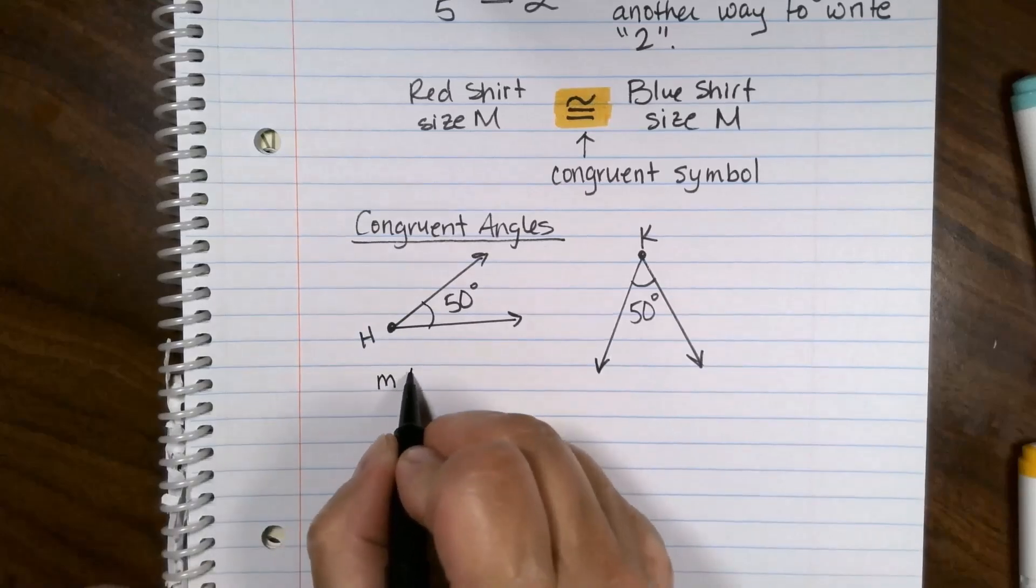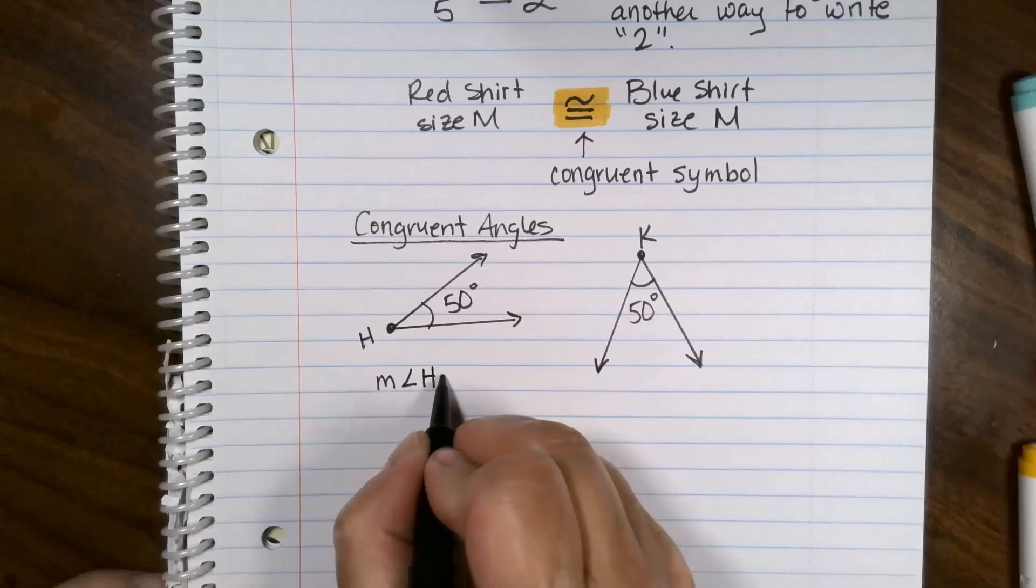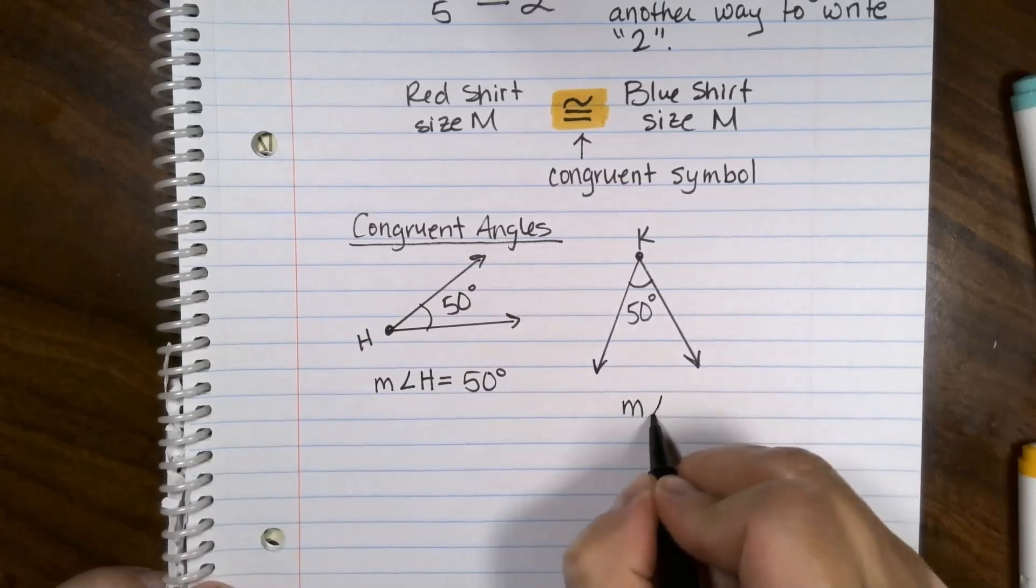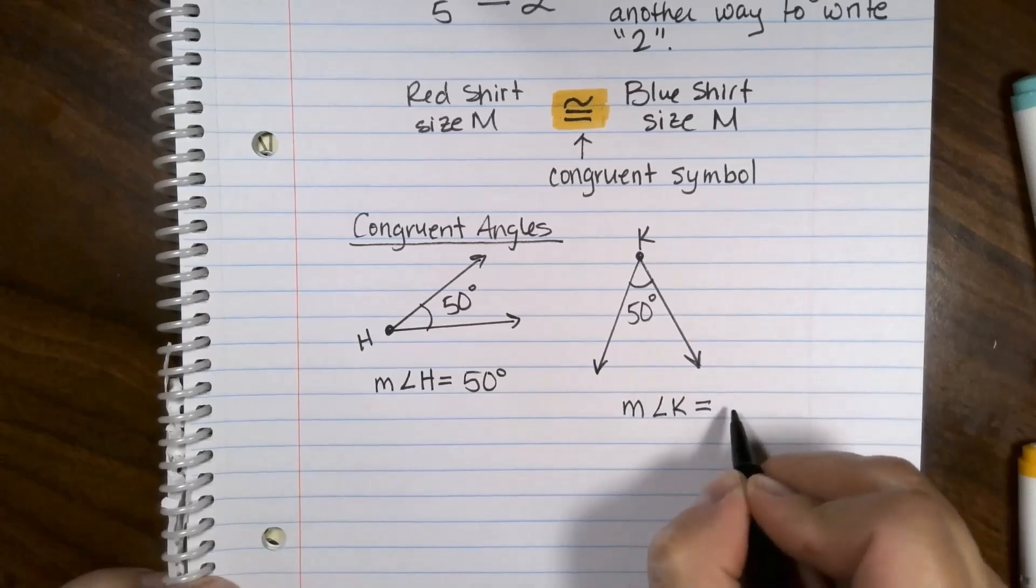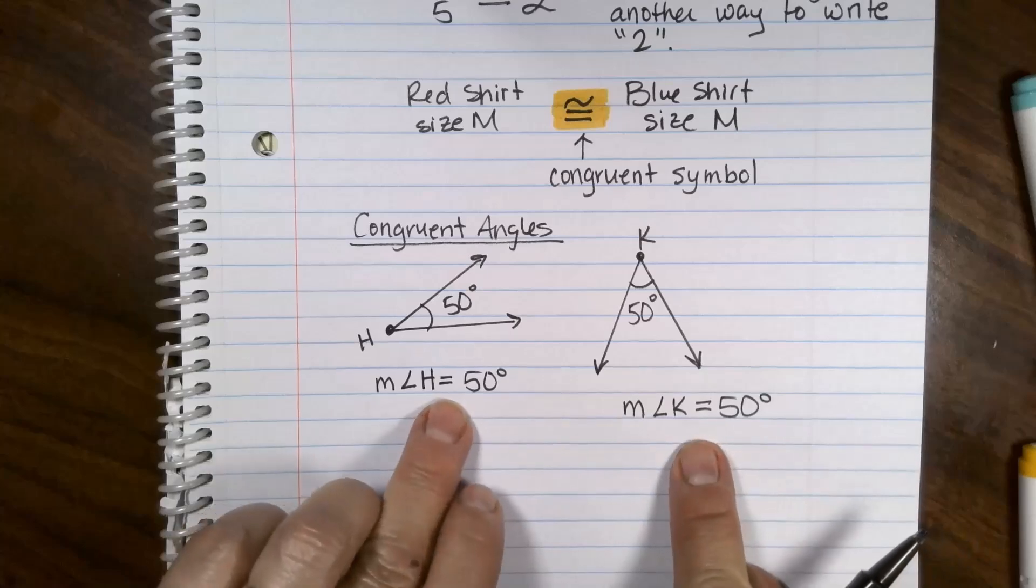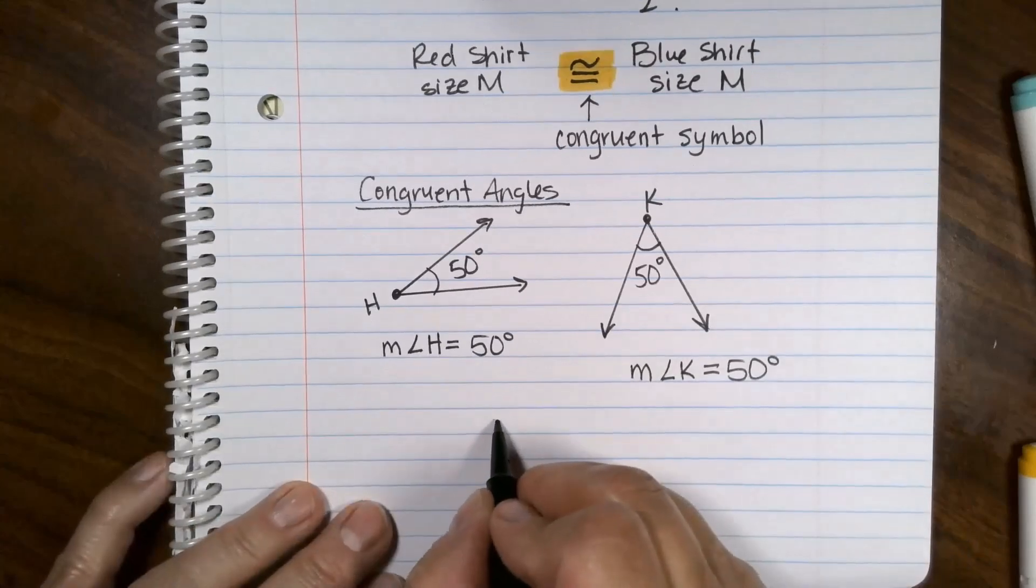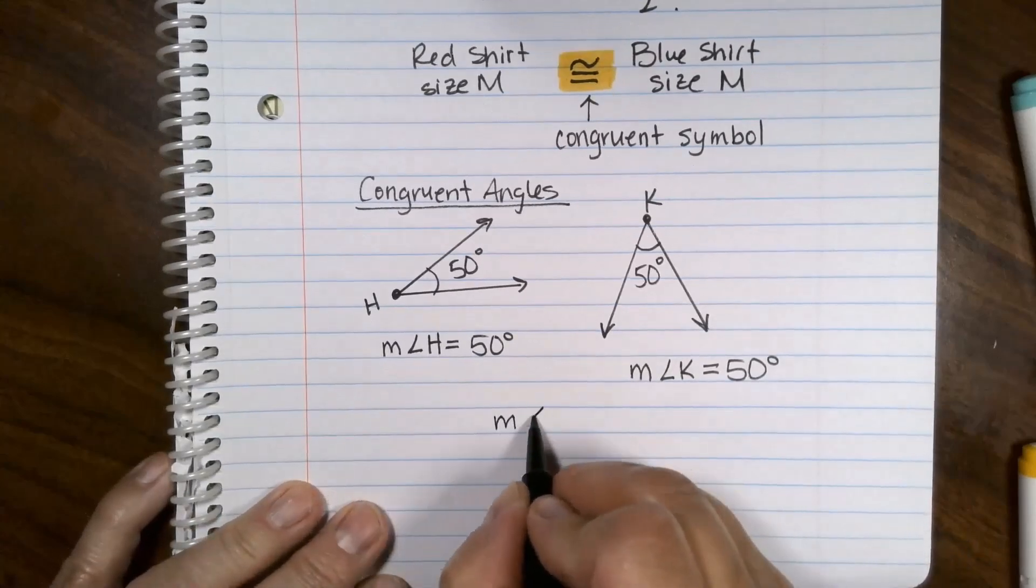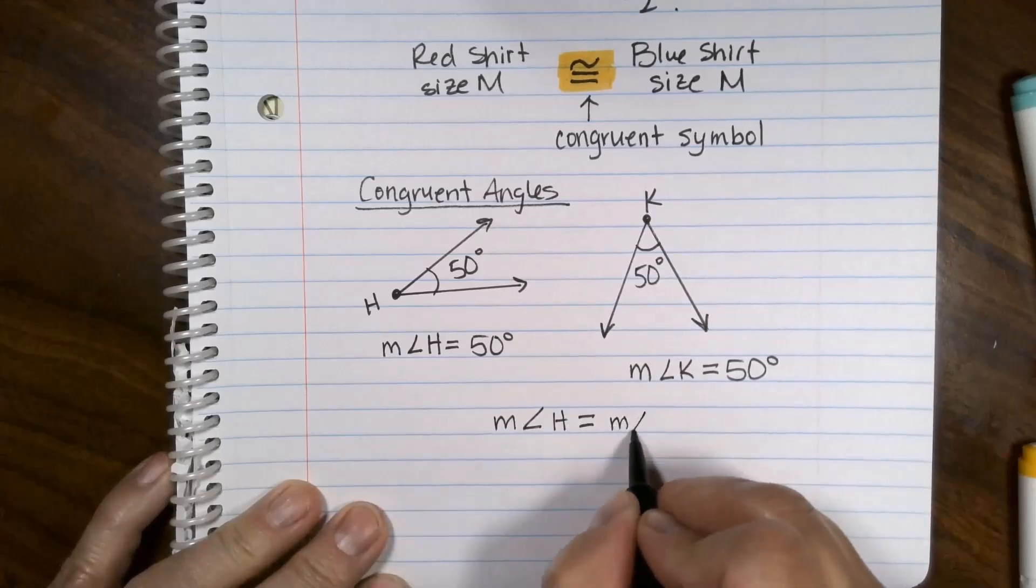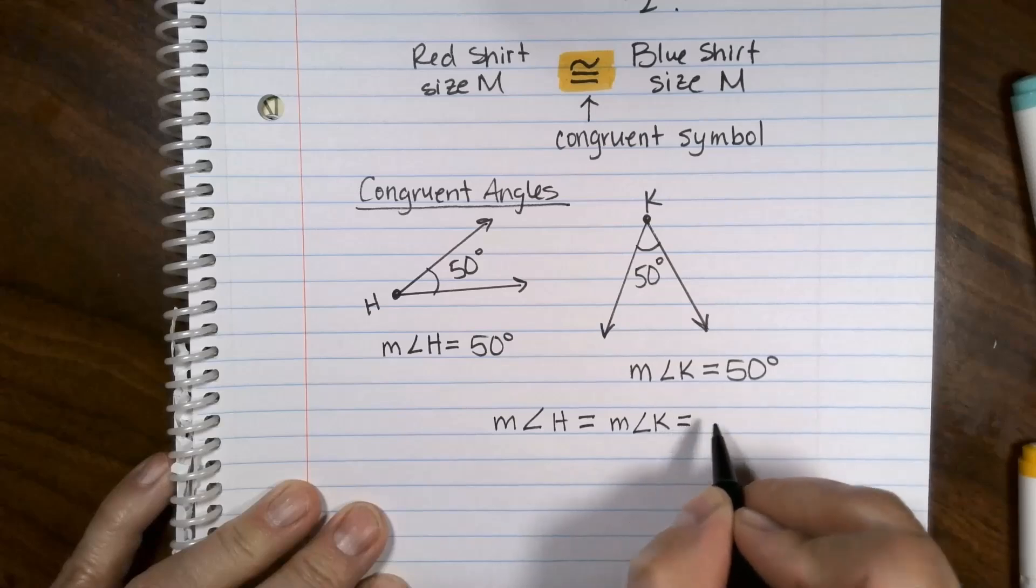The measure of angle H equals 50 degrees. The measure of angle K also equals 50 degrees. Since these two measures are equal, we can write this: the measure of angle H equals the measure of angle K. I'm not talking about the two separate angles. I'm talking about their size.